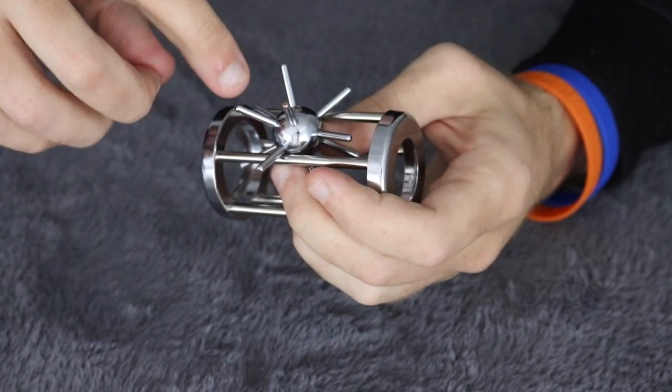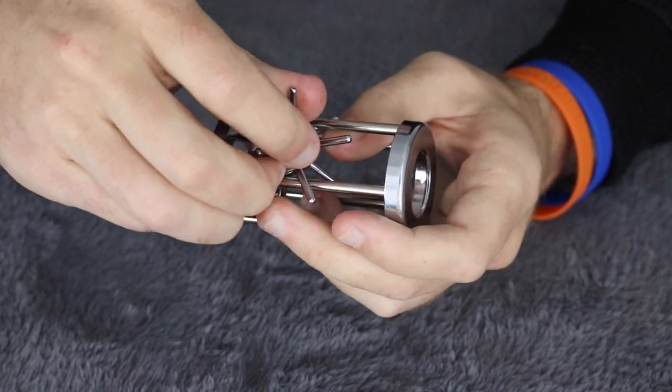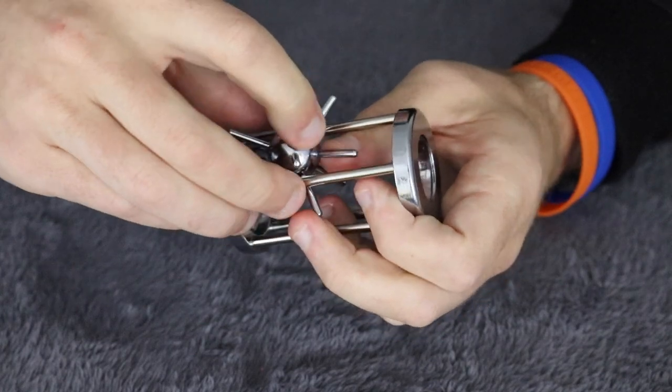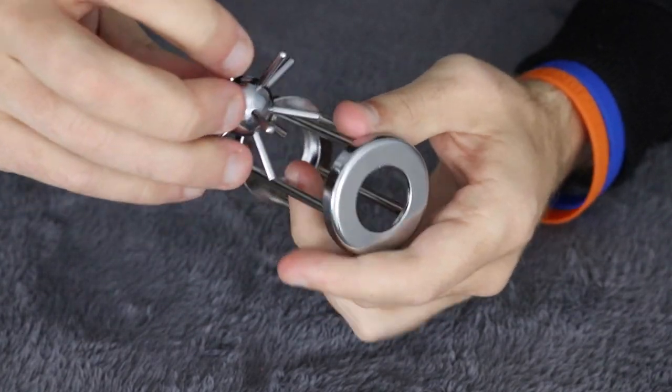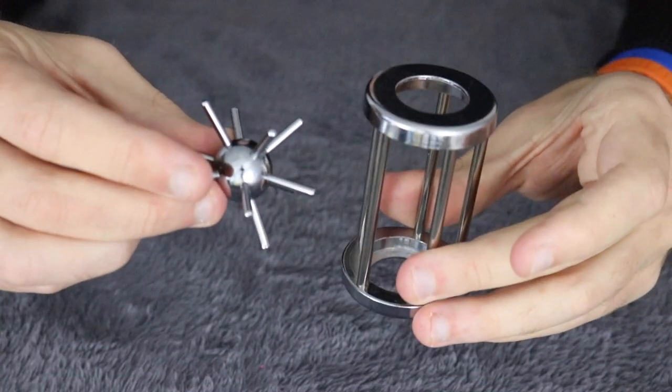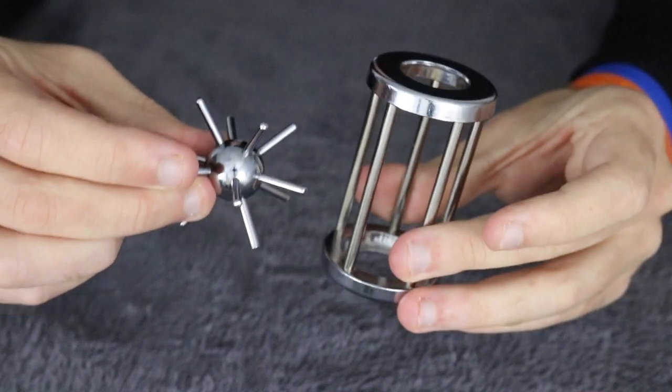There we go, we've got one, two, three, four, five, six, seven spikes out now. I'm pretty sure we're very close. Oh, there we go! There you have it - the spiked ball has been removed from the cage.